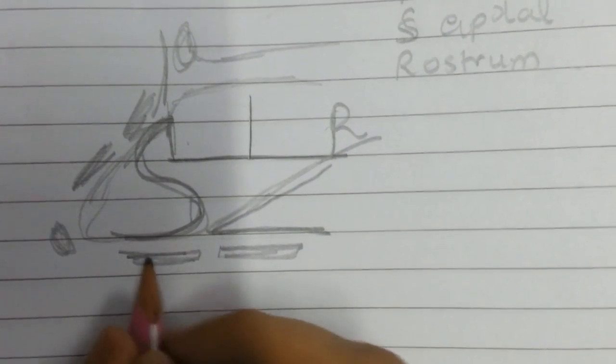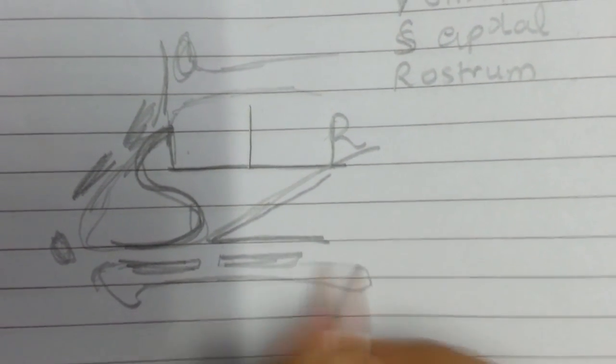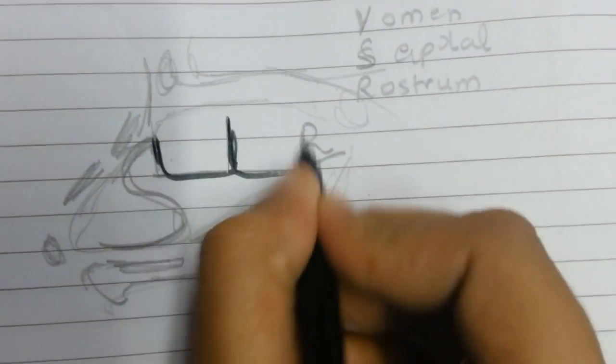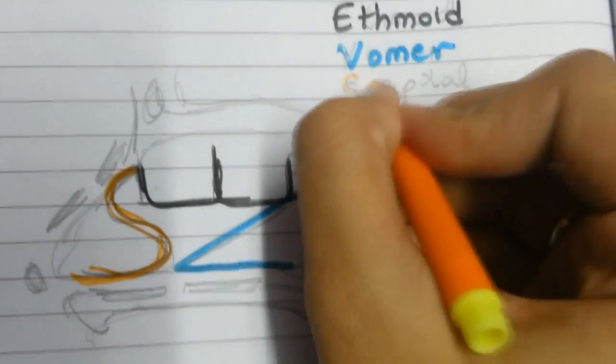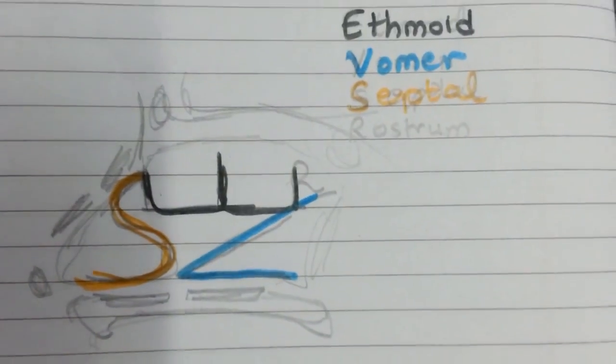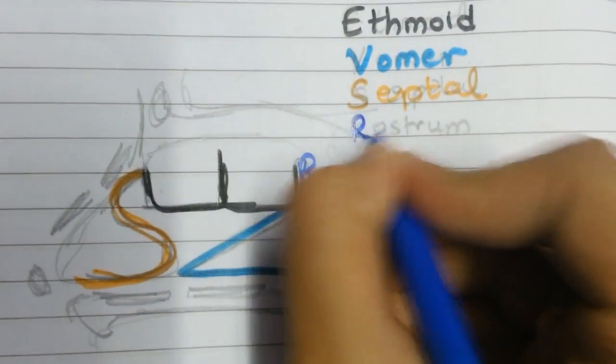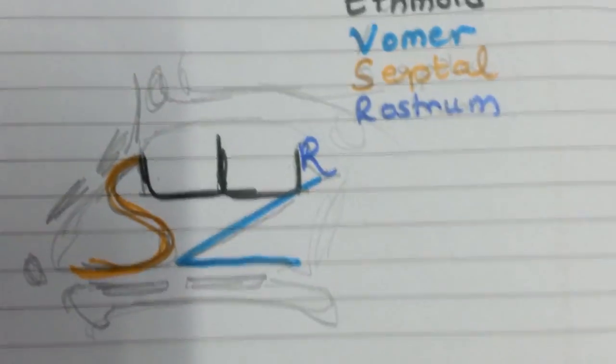Let's revise real quick. First, the perpendicular, then an E for ethmoid. Then we draw V for vomer, then S for septal cartilage, and then R for rostrum of the sphenoid bone.